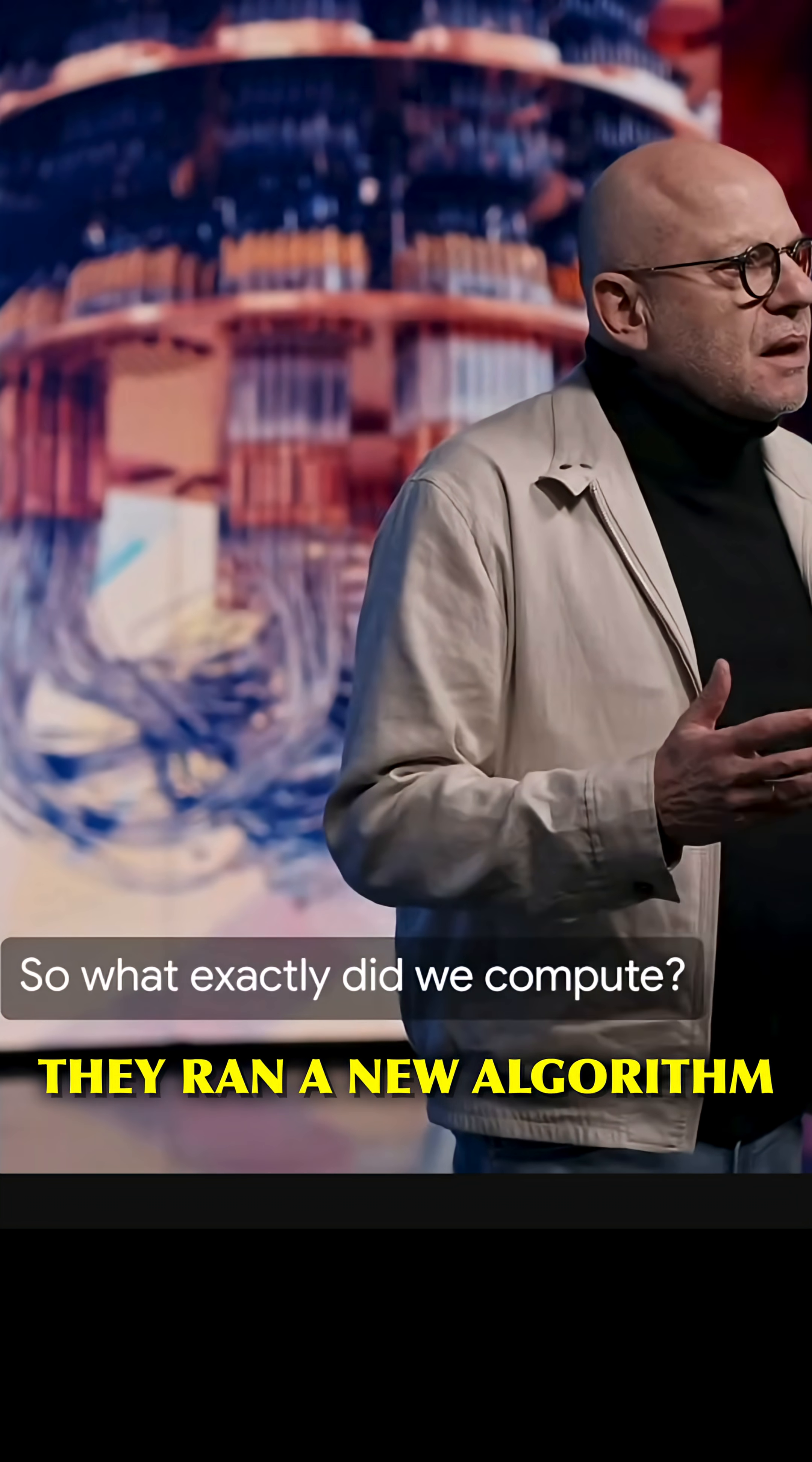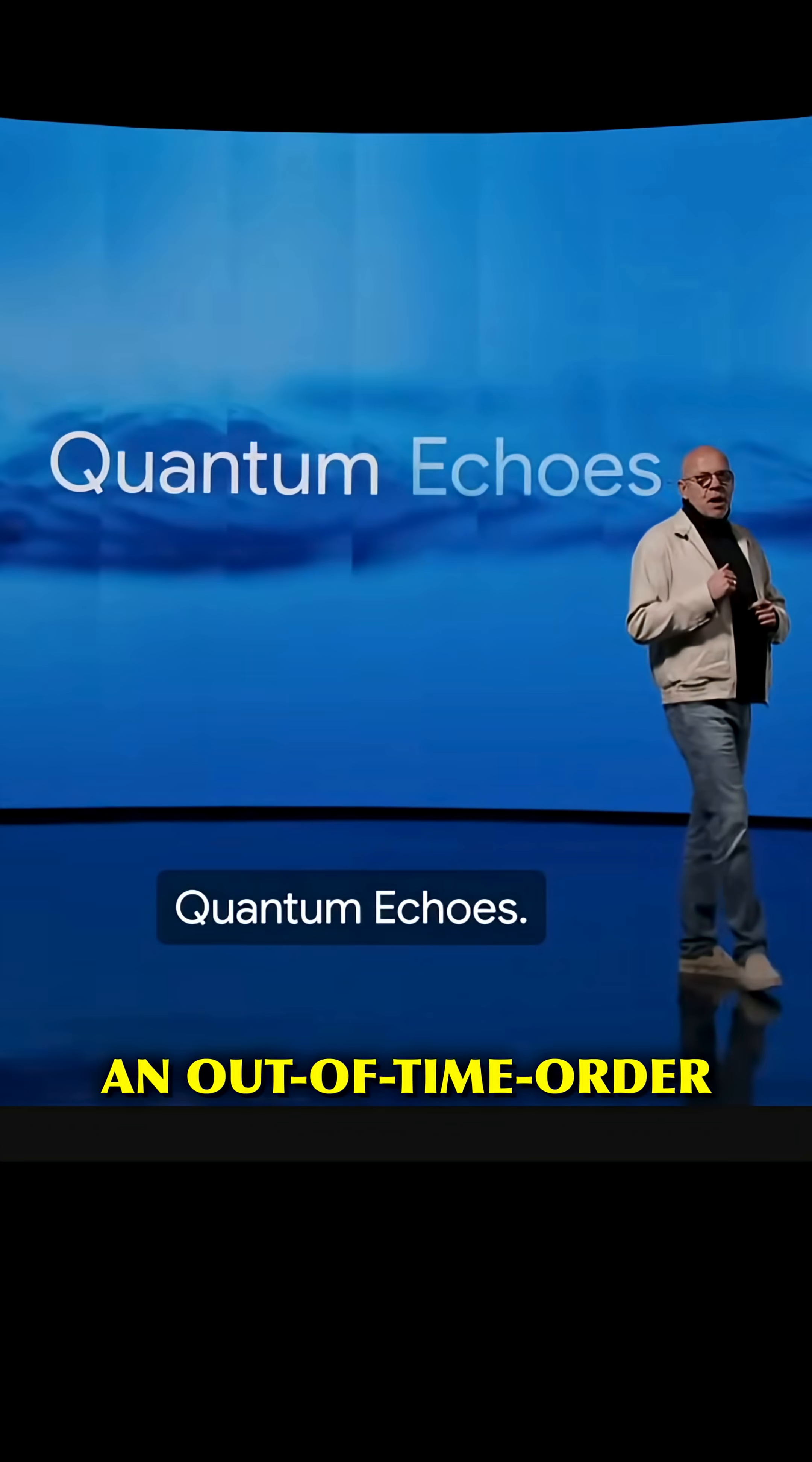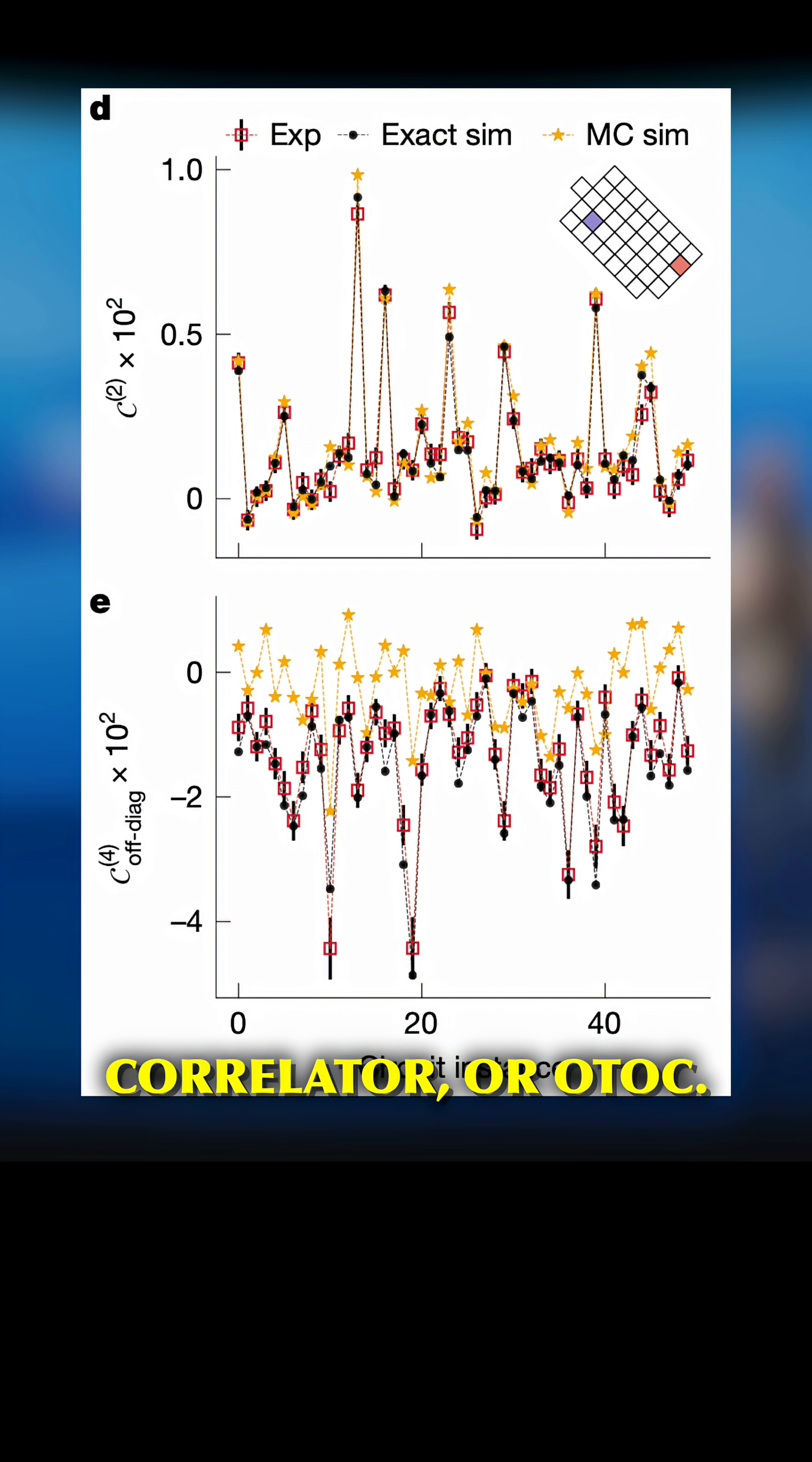They ran a new algorithm called quantum echoes, calculating an actual physical quantity, an out-of-time-order correlator or OTOC.